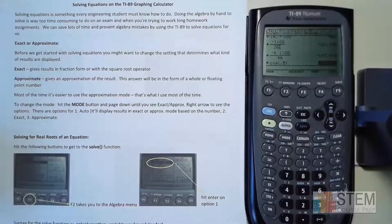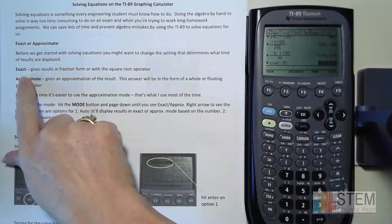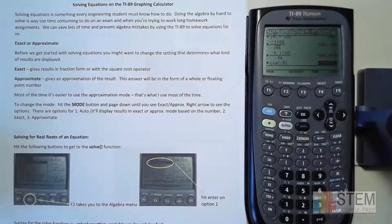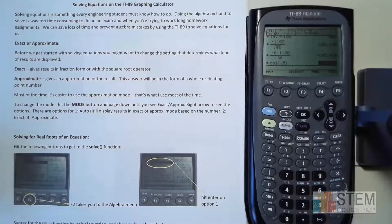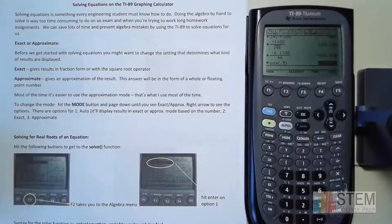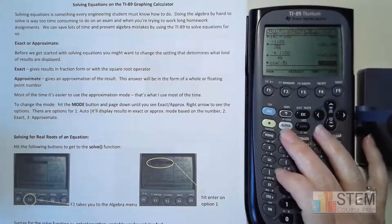If you have your calculator in exact mode, it's going to give you results in terms of fractions, and if you have a square root it's going to show the square root. I personally don't really like that mode — I like to see the actual floating point number, like 15.734 for example. I don't want to see a fraction with whole numbers. So let's go over how to change that and do a couple of examples.